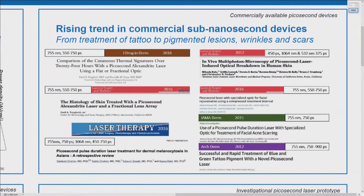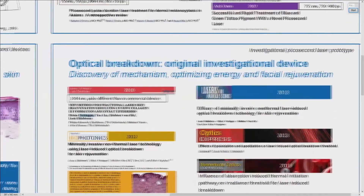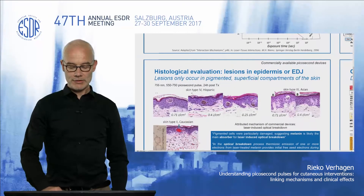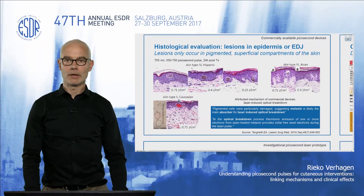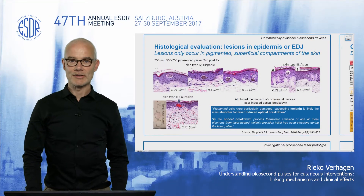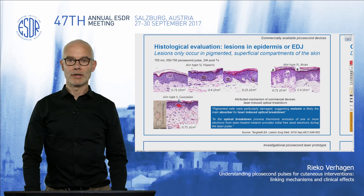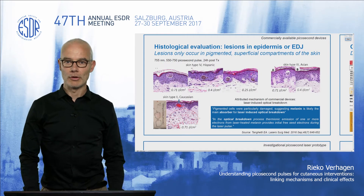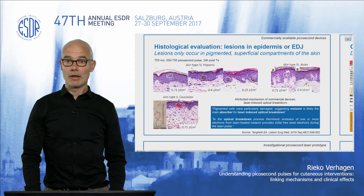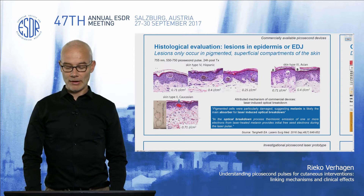We have seen in recent years a dramatic increase in the number of picosecond laser treatment devices. These were originally designed for tattoo removal but recently are also being used for the removal of wrinkles and scars. Histologically speaking, we see that these commercial picosecond laser systems are currently generating small lesions inside the epidermal layer of the skin, mostly in the pigmented areas.